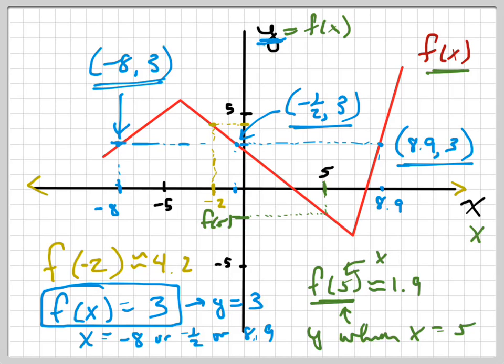That's a little look into what function notation is all about. Function notation is a simplified way, a concise way of talking about points on a graph. f of 5 equals 1.9 means y equals 1.9 when x equals 5. And so you have to understand how to use that going backward and forward.